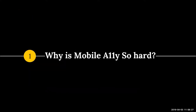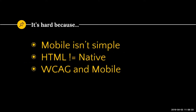So let's jump into our first section: why is mobile accessibility so hard? There are plenty of reasons, but I broke it down into three major points. First of all, mobile isn't simple — and that's the truth. HTML does not equal native code. There are different spaces, different beasts. And the WCAG standards and mobile have an interesting interaction with one another.